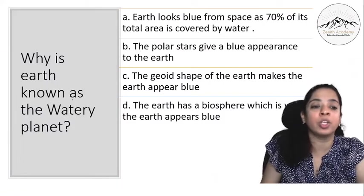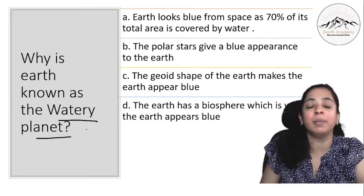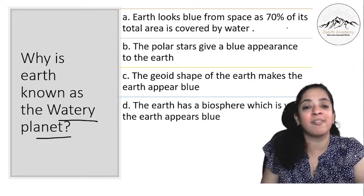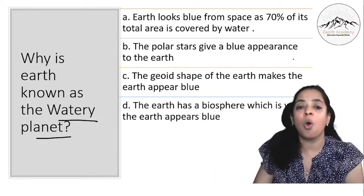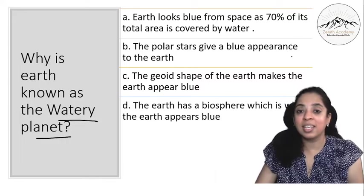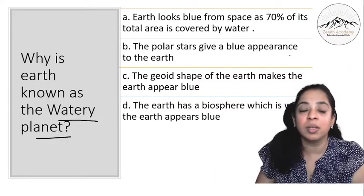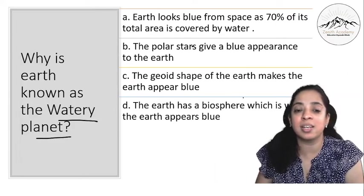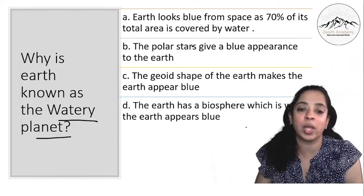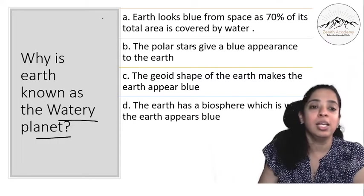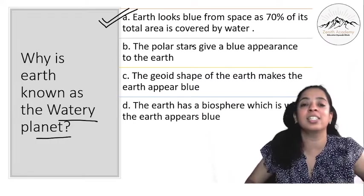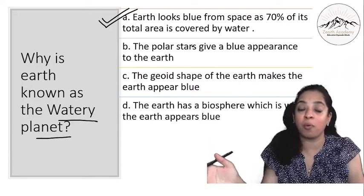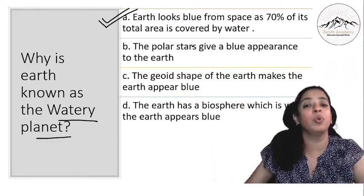Next. Why is Earth known as watery planet? Because Earth looks blue from space as 70% of the total area is covered by water, or the polar stars give a blue appearance to the Earth, or the geoid shape of the Earth makes the Earth appear blue, or the Earth has a biosphere which is why the Earth appears blue? So obviously the correct answer is this, because from space 70% of the total area is covered by water. That is why it appears blue from space.